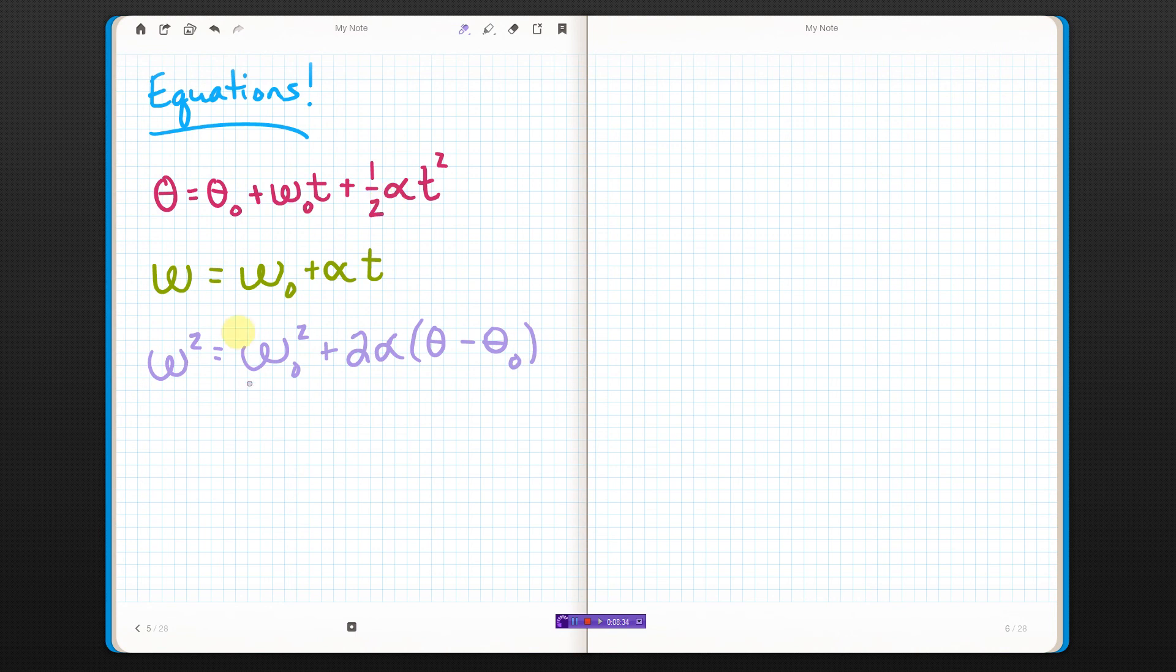Literally exactly the same equations that we used in the kinematics unit. It's just that we change x to theta, so instead of linear position we have angular position. We change v to omega, so instead of linear velocity we have angular velocity, and a to alpha, so instead of linear acceleration we have angular acceleration. That's really it.